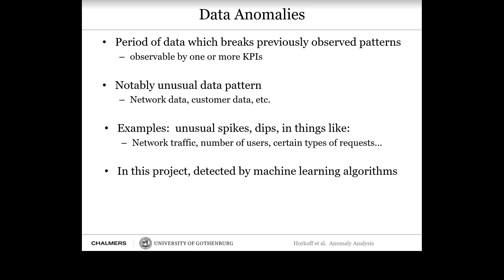Examples include unusual spikes, dips, and things like network traffic, number of users, and certain types of requests. In this project, our colleagues are detecting these data anomalies using machine learning algorithms, but we're not talking too much about the AI aspect here. We're starting with the anomalies that have been detected and then trying to do some deeper analysis.